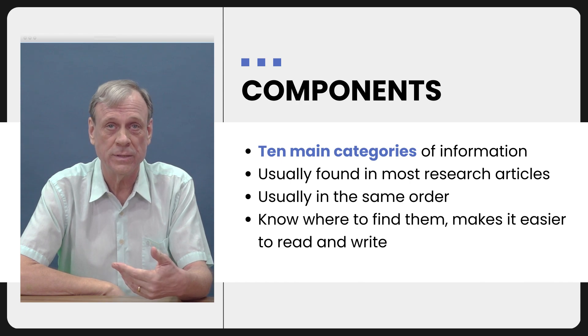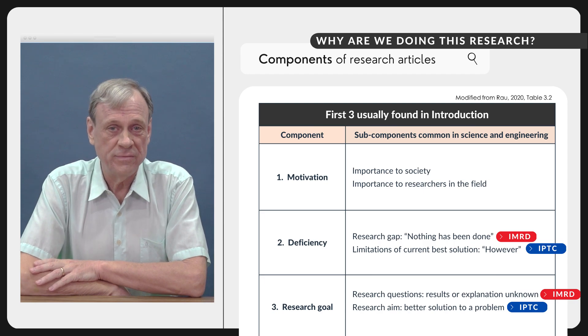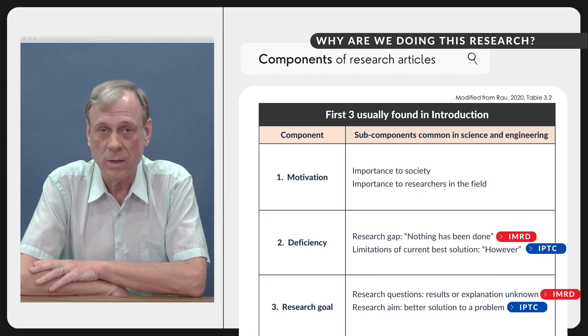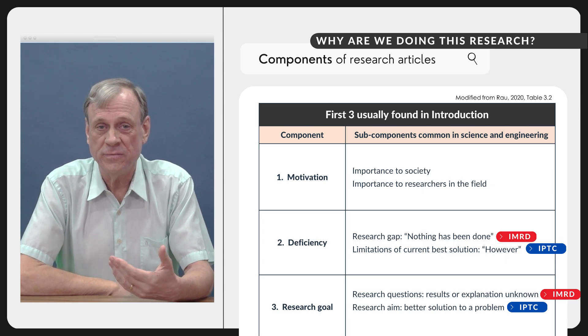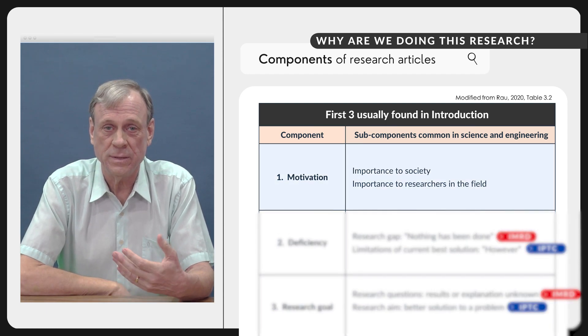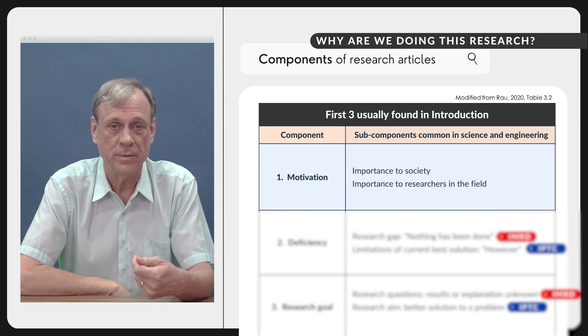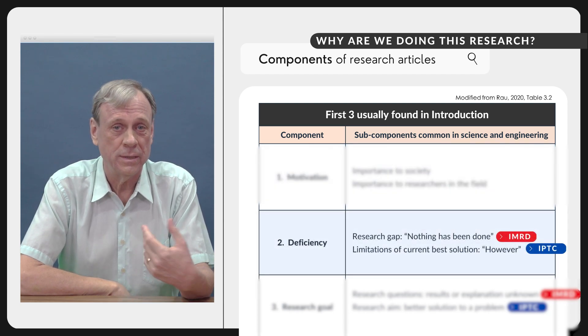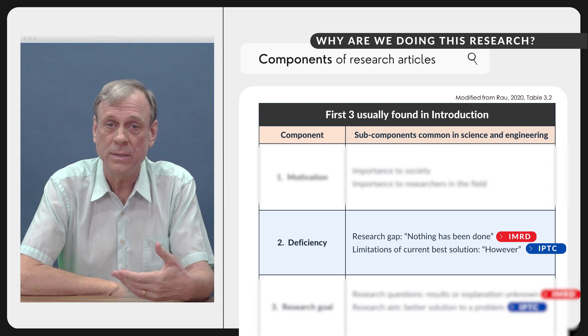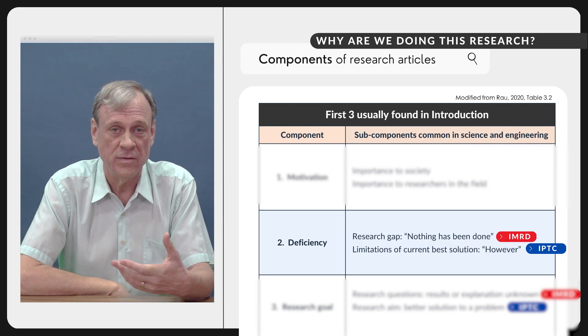So the first three are usually found in the introduction and they talk about why are we doing this research in the first place. First you find usually the motivation, the importance to society, the importance to researchers in the field. That's followed by something about the limitations of previous research, again either the research gap, something that has never been studied, or the limitations of previous research, something like this has been done however there's still a problem to be solved.